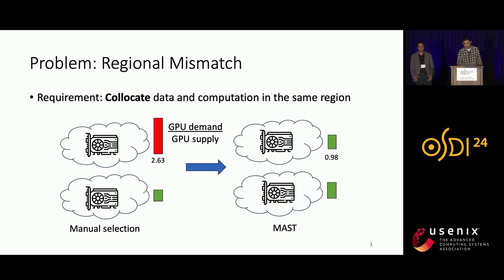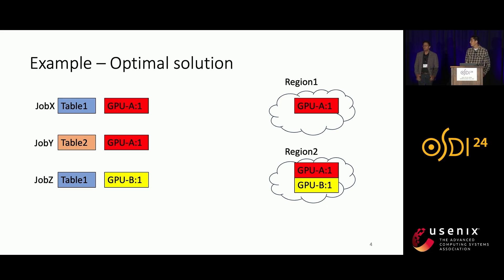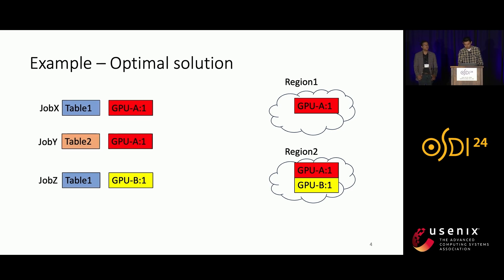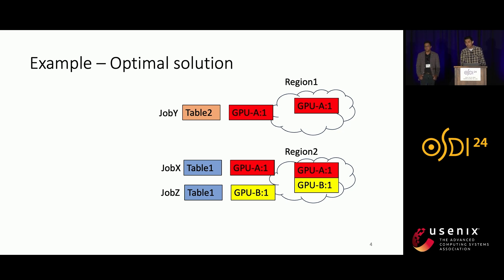To give a concrete example of how users' manual selection can lead to suboptimal results, let's suppose we have three jobs. Job X has Table 1 as input and requires one GPU of type A. Job Y has Table 2 as input and also requires one GPU of type A. Job Z has Table 1 as input and requires one GPU of type B. We have two regions: Region 1 has one GPU of type A, and Region 2 has one GPU of both types. The optimum solution is to place Table 1 in Region 2 so that we can run both Job X and Job Z there, place Table 2 in Region 1, and run Job Y in Region 1. This fully utilizes all GPUs and only needs one copy of Table 1.